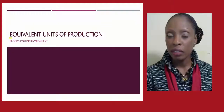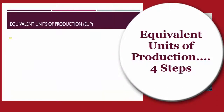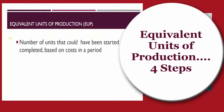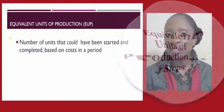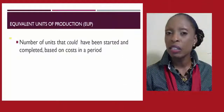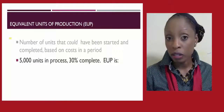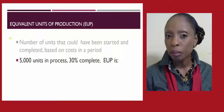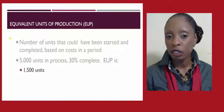The key learning objective within a process operations environment is the equivalent units of production. The equivalent units of production represents the number of items that could have been started and completed based on the cost within a period. For example, if a company started 5,000 units in production but only completed those items 30%, then the equivalent units of production would be 1,500.